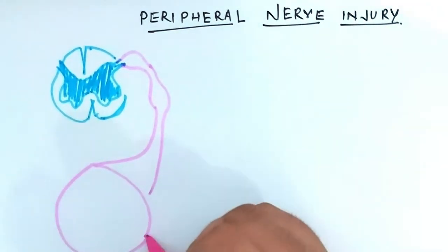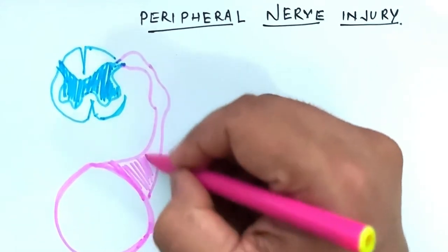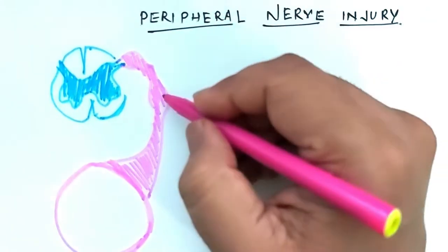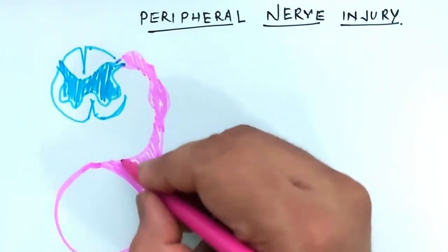In this diagrammatic representation we are going to show you the spinal nerve emerging out of the spinal cord. A part of this nerve from dorsal root ganglion to the terminal part of its innervation is called the peripheral nerve.